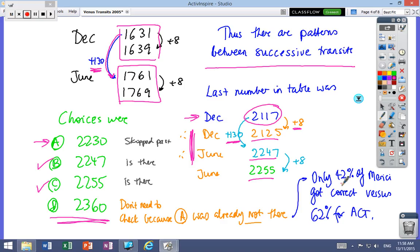In this particular question, not a good result—42% of Marucci versus 62% for the states. This is one where, again, don't get overwhelmed by numbers. You're looking for patterns.